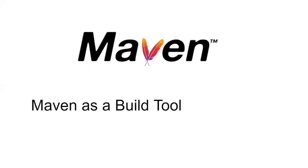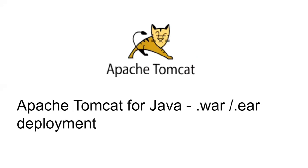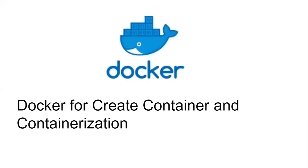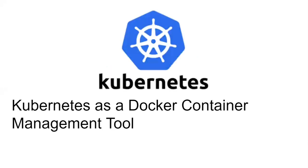Maven we will use as a Java code builder. We will deploy our artifact into the Tomcat server — we will use Tomcat to deploy our Java output, the target WAR or EAR file. Then we will use Ansible as a configuration management tool. We will deploy our artifact to a Docker container or push it to Docker Hub. For containers we will use Docker, and for container management we will use Kubernetes.